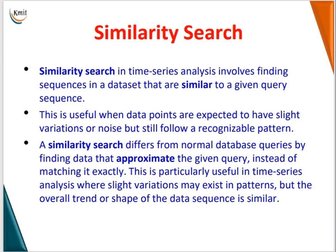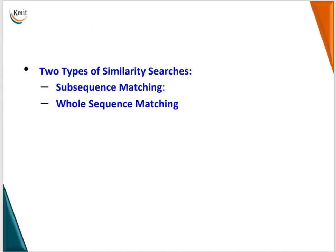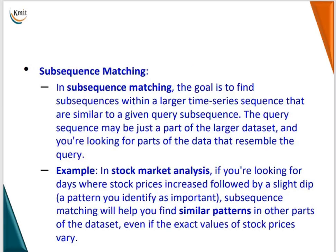The next method is similarity search. Similarity search in time series analysis involves finding sequences in a dataset that are similar to a given query. This is useful when data points are expected to have slight variations or noise but still follow recognizable patterns. There are two types: subsequence matching and whole sequence matching. In subsequence matching, we find sequences within a long time series that are similar to the given query. For example, in stock market analysis, if you are looking for days where the stock price increases followed by a slight dip, subsequence matching finds similar patterns in other parts of the data even if the exact values vary.